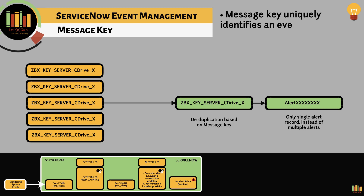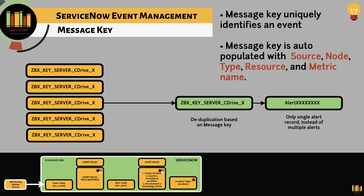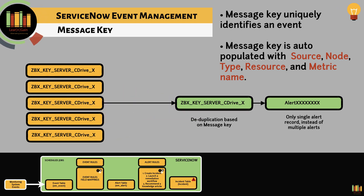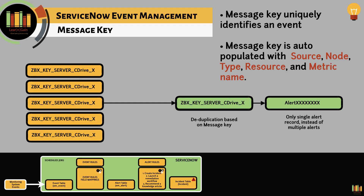One of the most important fields within an event record is the message key. Message key uniquely identifies an event, determines if a new alert record should be created, or updates an existing alert. The message key remains the same in the event of a repeated event. Event management deduplicates event records with the same message key and updates the existing alert with relevant information. If the message key field is empty, the system auto-populates it with information from source, node, type, resource, and metric name.